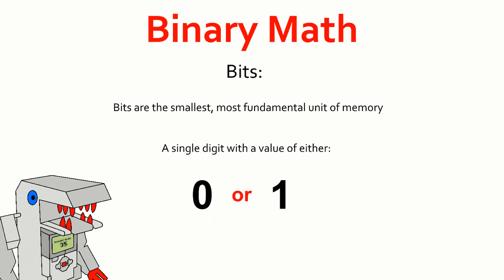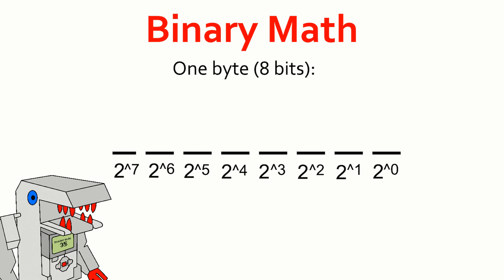Any discussion of computer memory has to start from the bottom up with the bit. The bit is the smallest and most fundamental unit of memory. It's simply a single digit that can have a value of either 0 or 1. One bit on its own is not very exciting, you really can't do much with it. But take a whole bunch of bits and put them together, specifically 8 bits which forms one byte, and then you start cooking with fire. A byte is composed of 8 individual bits, and each of those bits is a placeholder for a different power of 2.